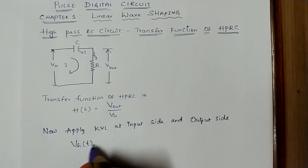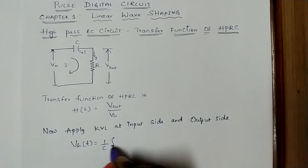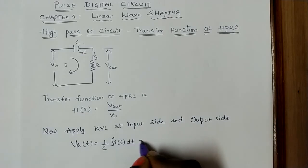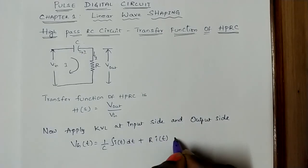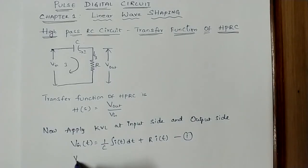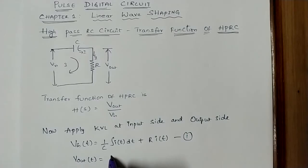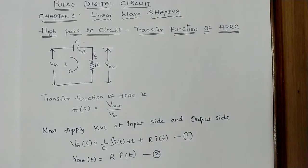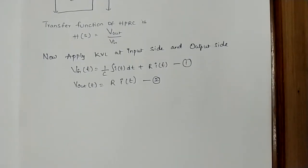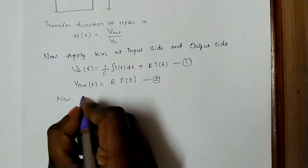Applying KVL at the input side gives equation 1: V_input(t) = (1/C)·∫i(t)dt + R·i(t). The output equation, equation 2, is: V_output(t) = R·i(t), since we are collecting the output across the resistor as shown in the figure.